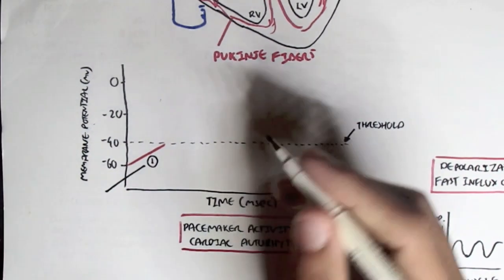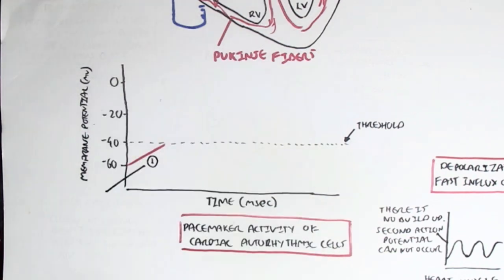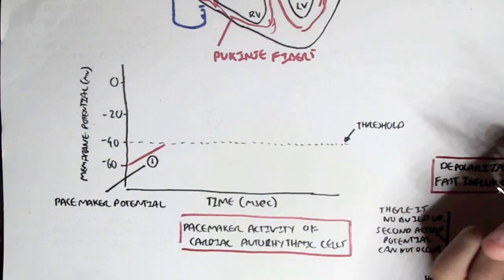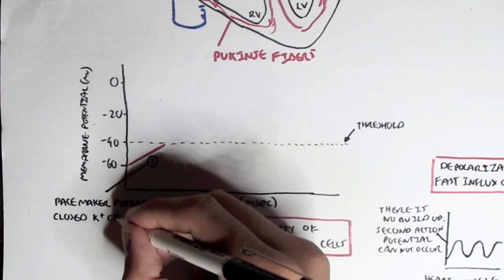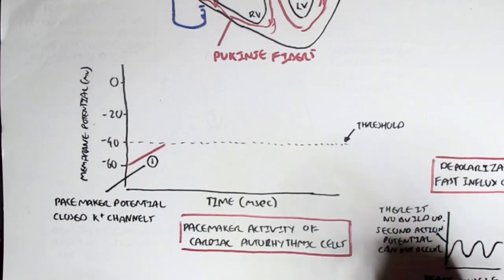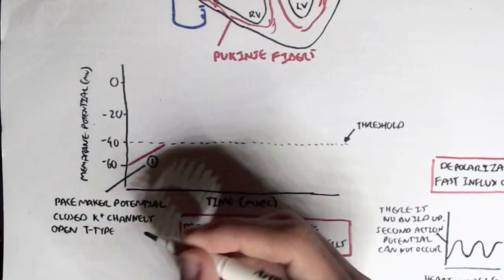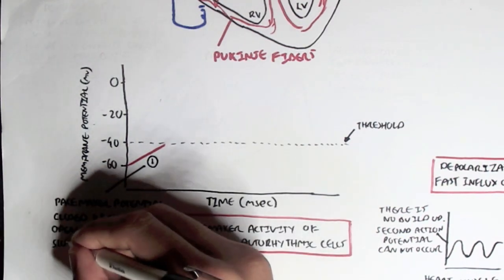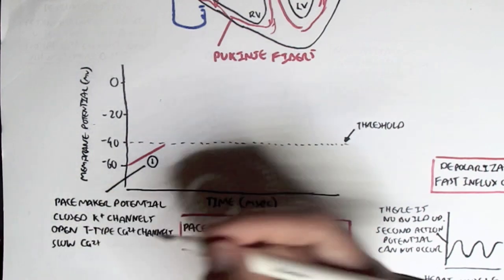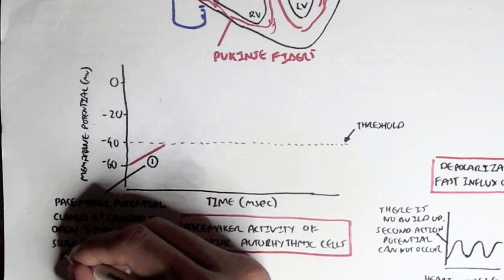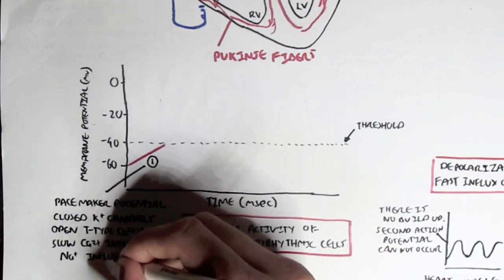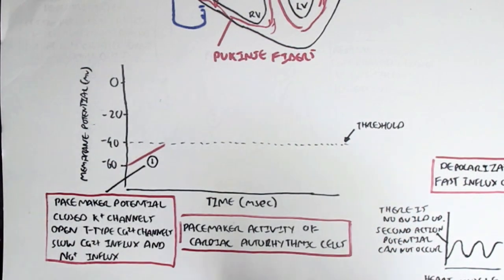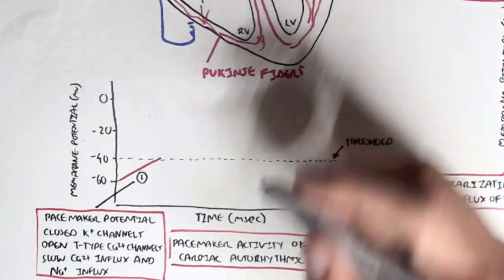In phase 1, we have the pacemaker potential, where the potassium channels are closed and the T-type calcium channels are open. There is a slow influx of calcium ions from the outside to the inside, which causes the membrane potential to become more positive — gradually rising toward threshold.